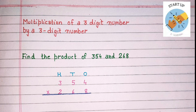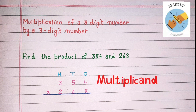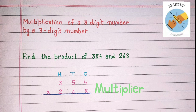And for 268, 8 will be written under the ones place, 6 will be written under the tens place, and 2 will be written under the hundreds place. Here, 354 is the multiplicand and 268 is the multiplier.